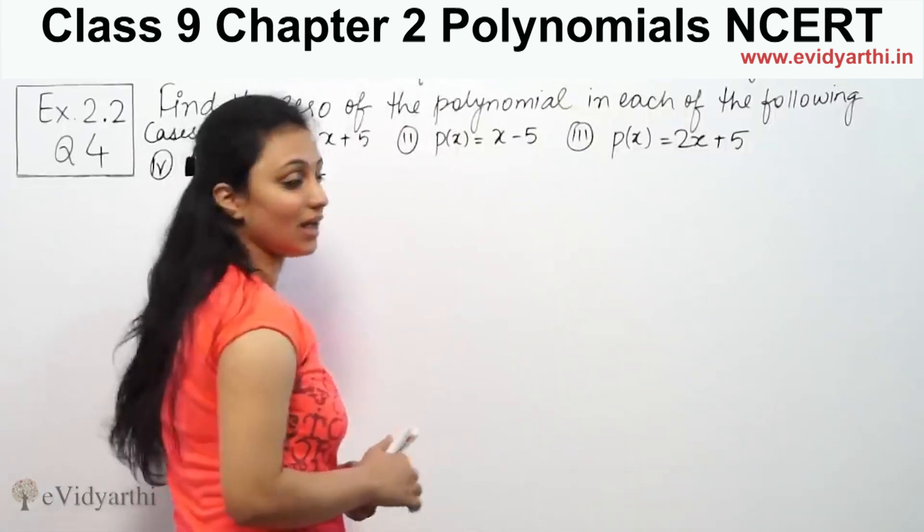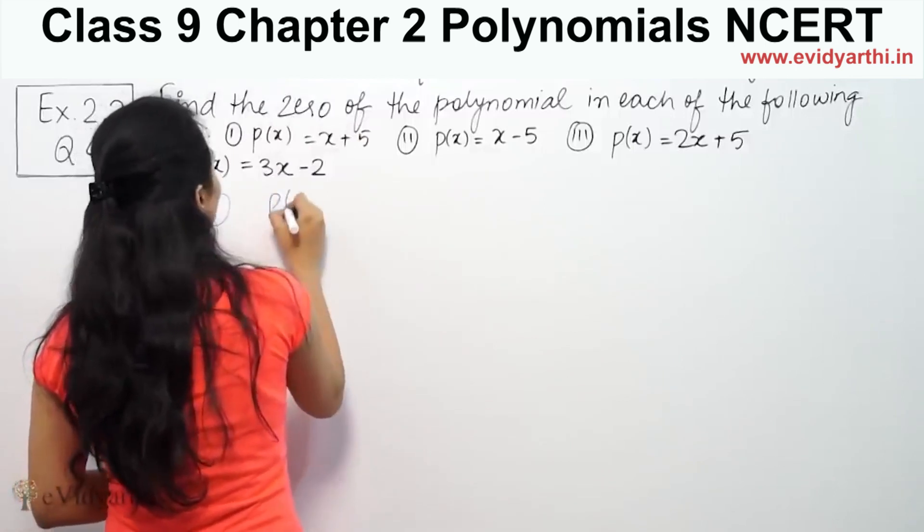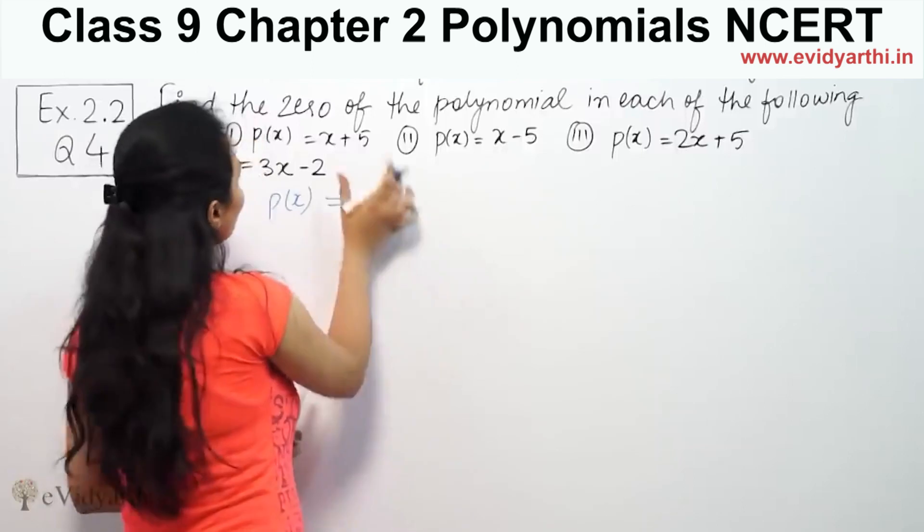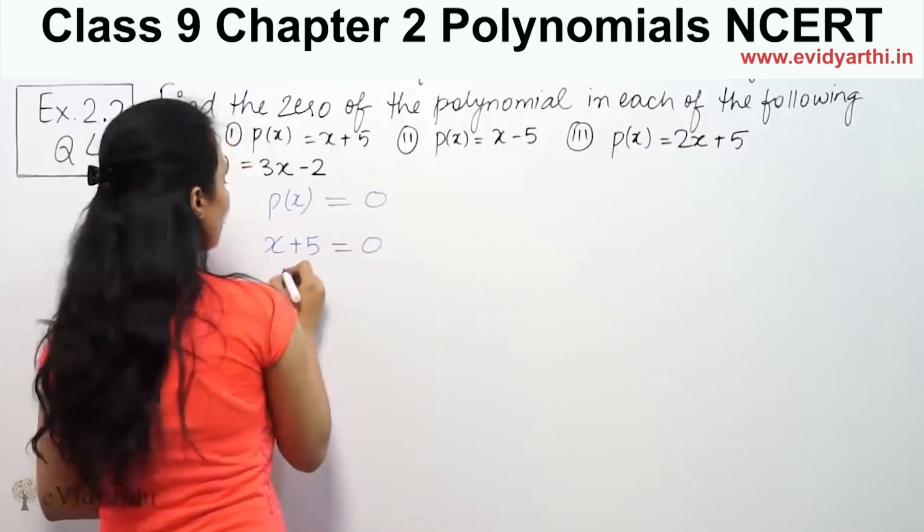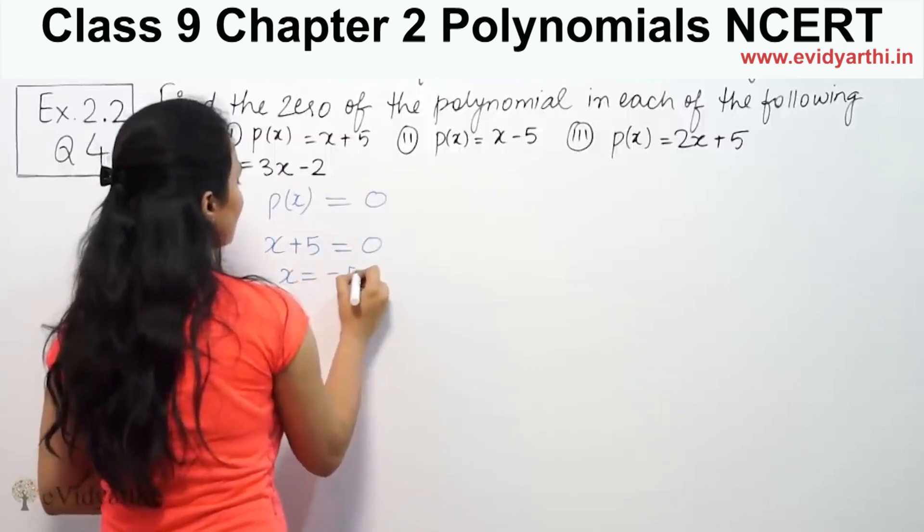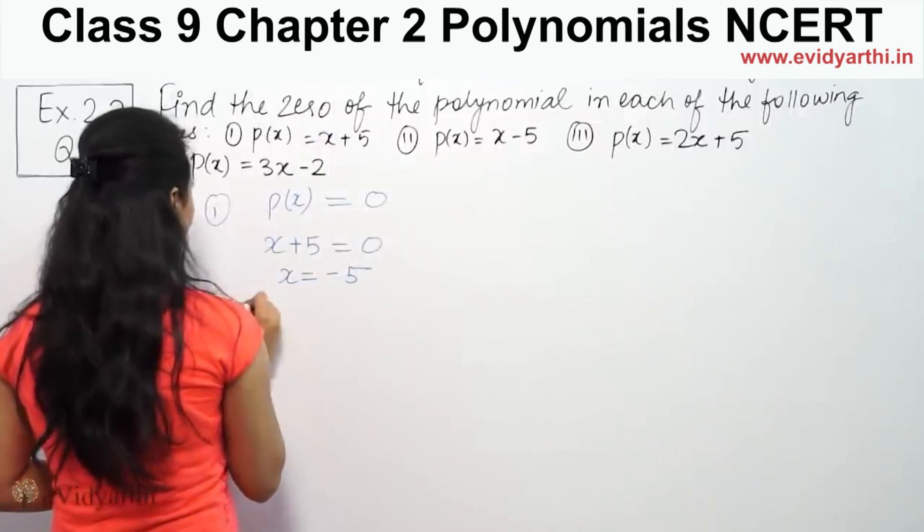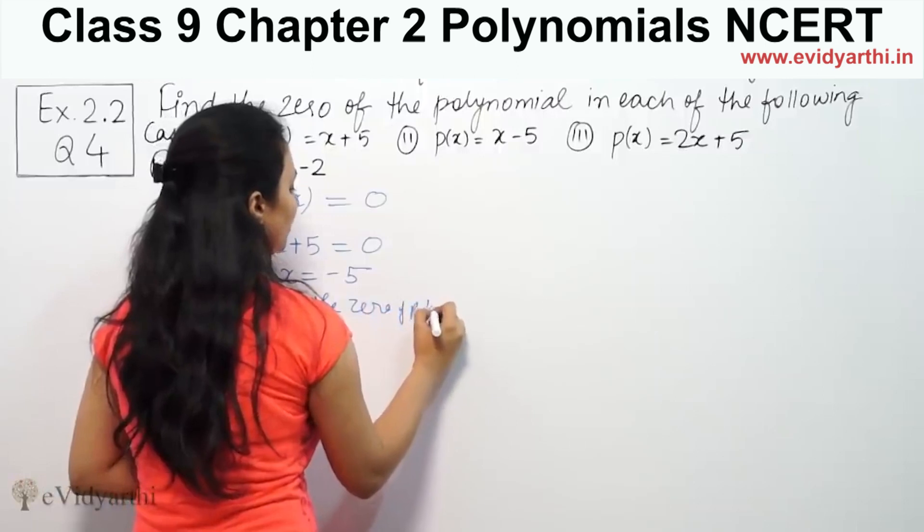We find the zeroes by setting the polynomial equal to zero. The polynomial given is p(x) = x + 5 equals to zero. So x is equal to minus five. Therefore minus five is the zero of the polynomial.